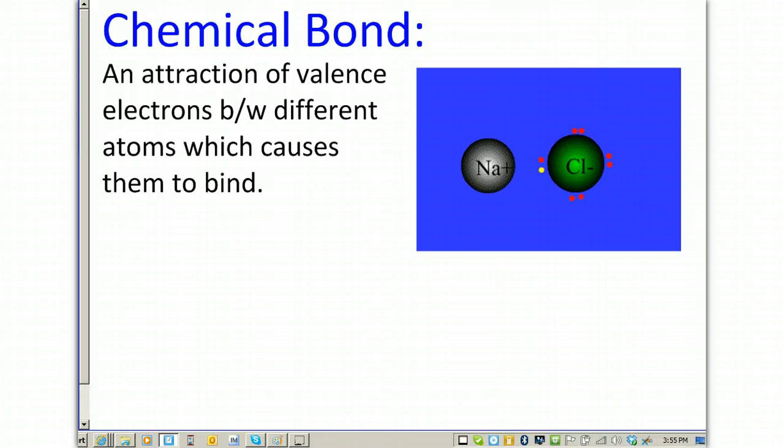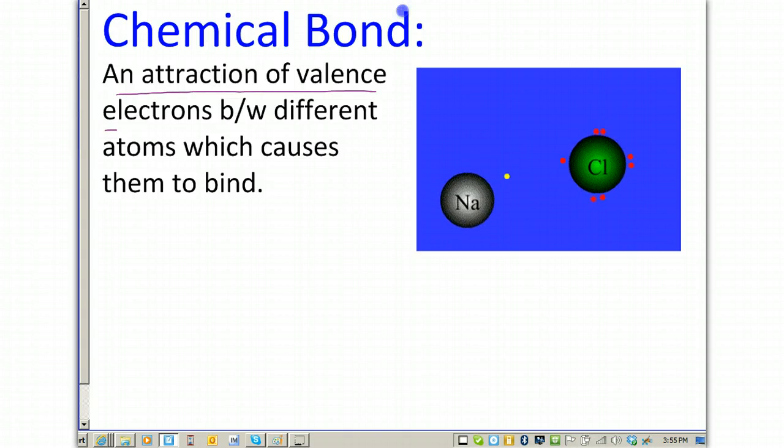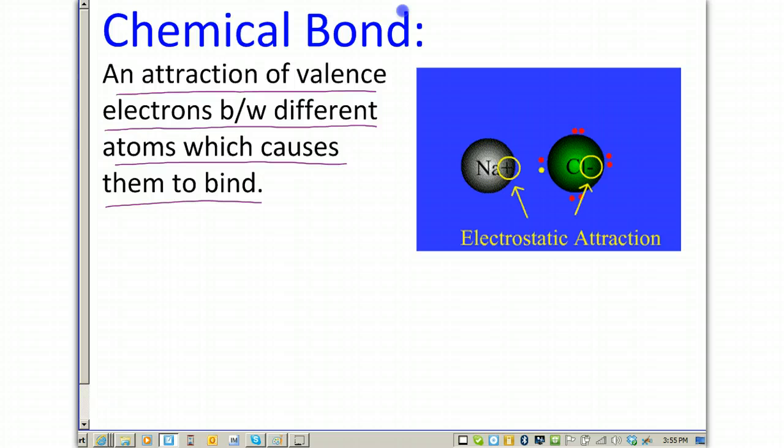A chemical bond is an attraction of valence electrons between different atoms, which causes them to bind. The key here is valence electrons. Only the electrons on the outer energy level are involved in bonding, not the internal electrons. That's why valence is so important in this chapter.